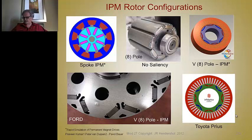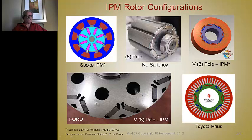Here are some interesting IPM configurations. The spoke type has magnet slabs mounted inside a rotor, arranged as north-south-south-north-north-south-south-north, so the flux is focused. The area ratio of the magnet surfaces to the pole face times the flux density determines the flux pushing into the stator to link its conductors.